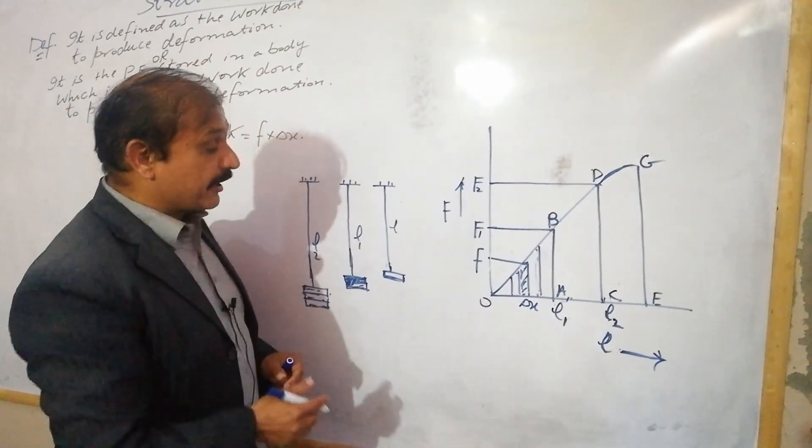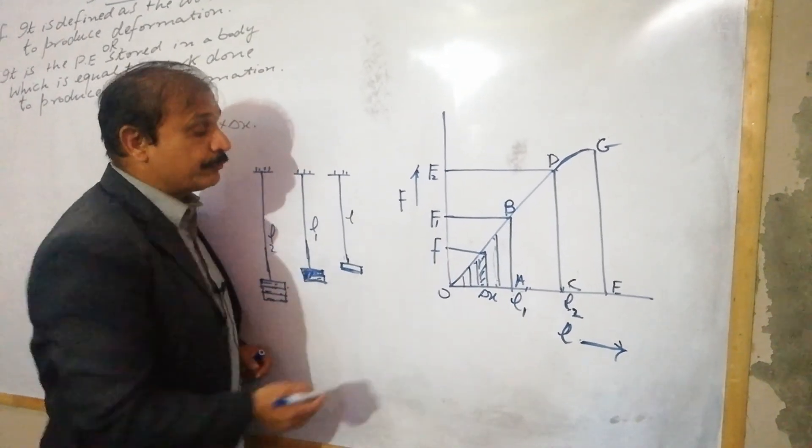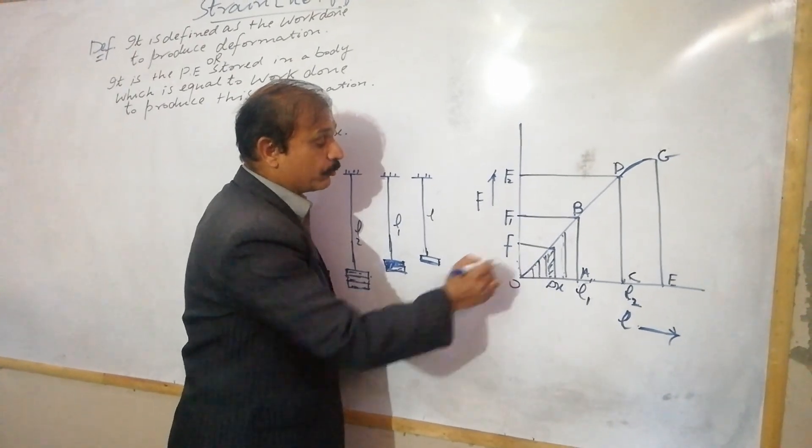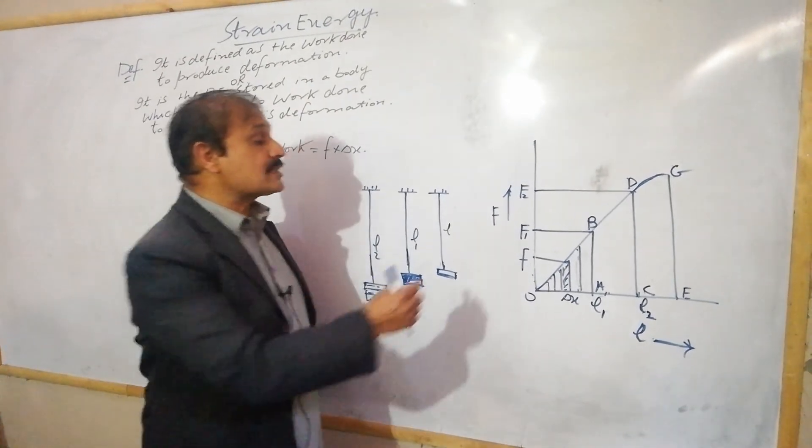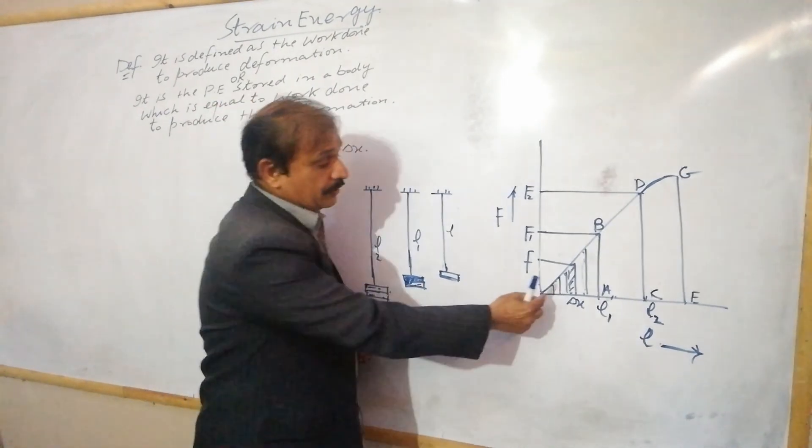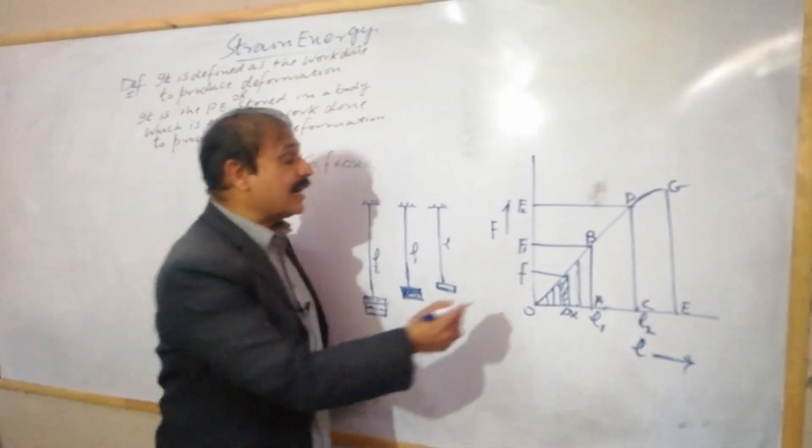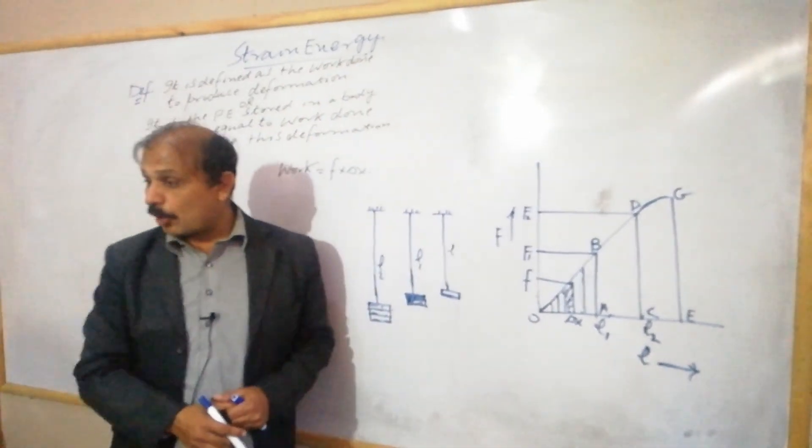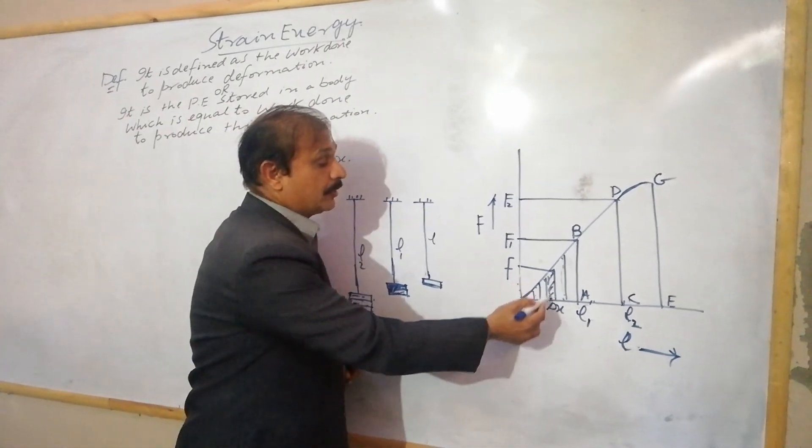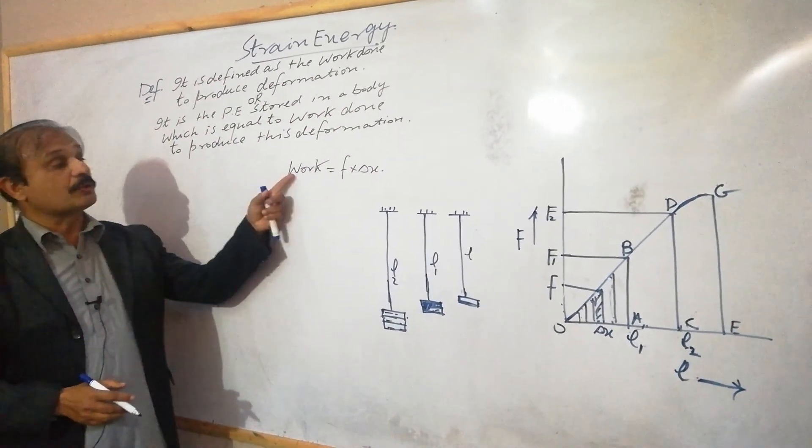If you look at this diagram again, we have different strips with variable force values for each strip. If you multiply this length into width, multiply each strip's area and add everything together, you will have total amount of work done just to produce this deformation. The strip's extension is delta x and its corresponding force is small f. So work equals f into delta x.